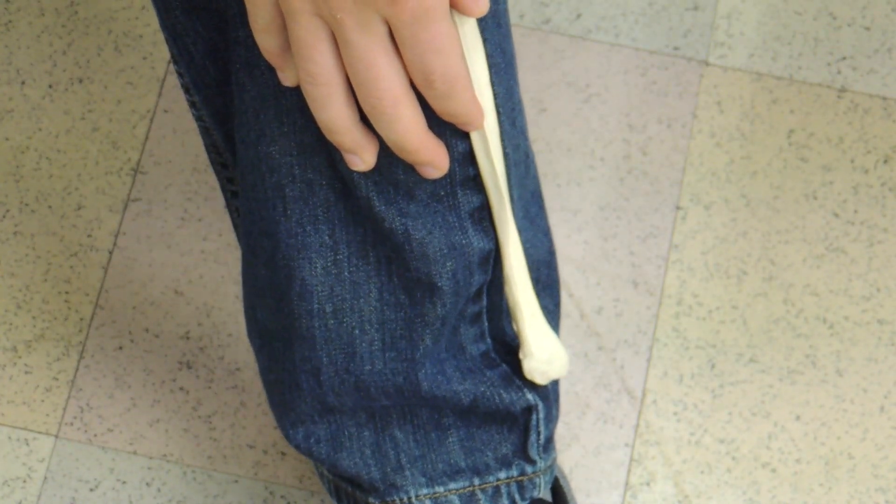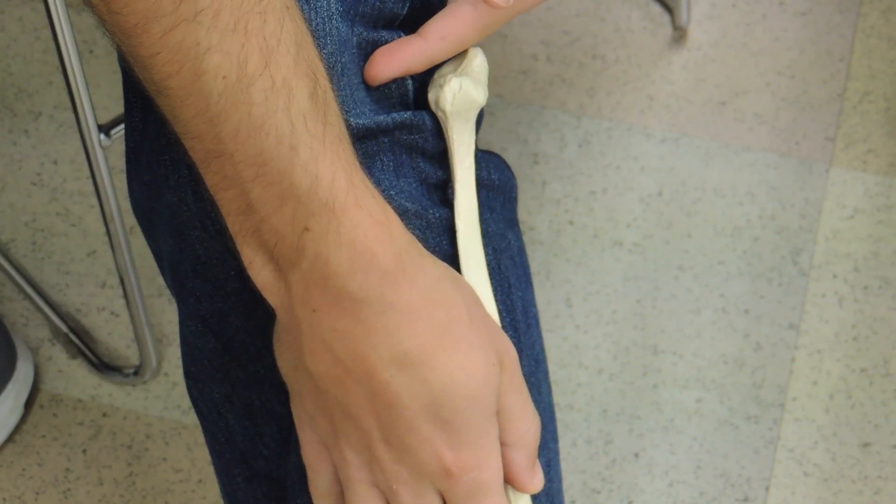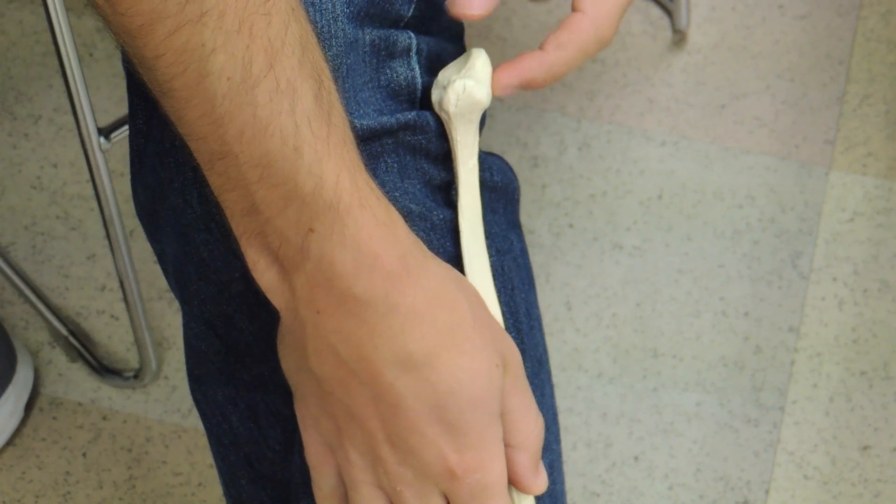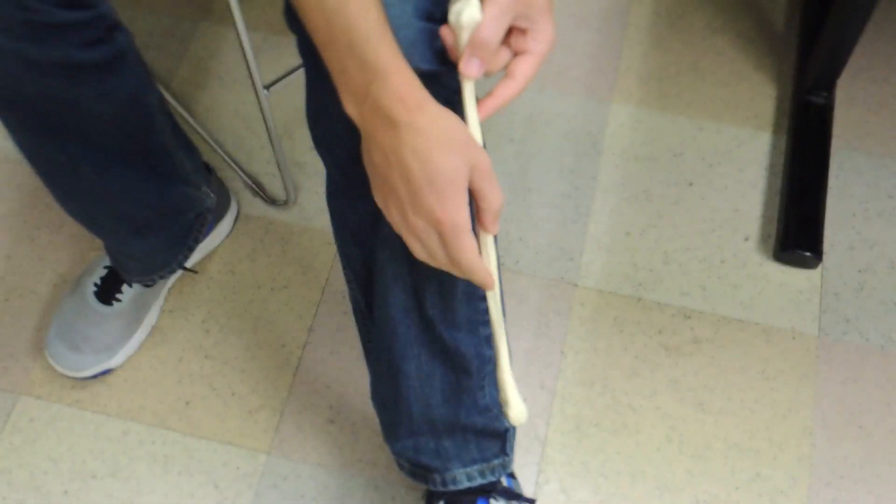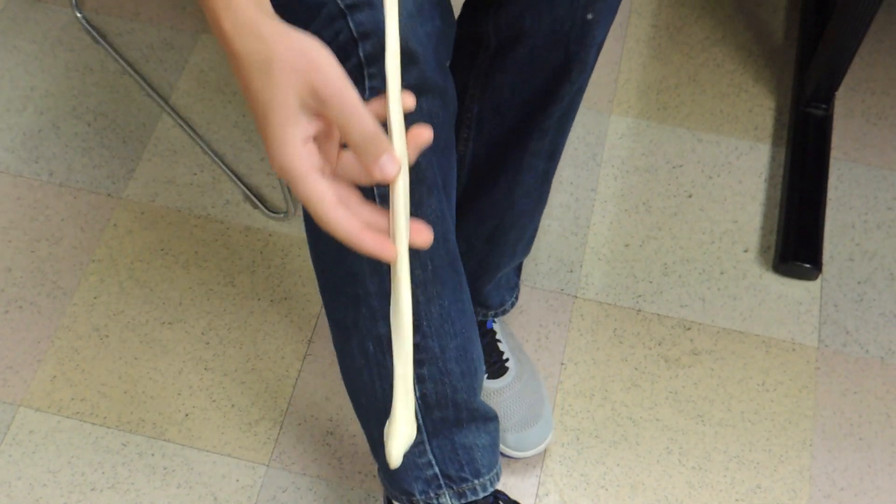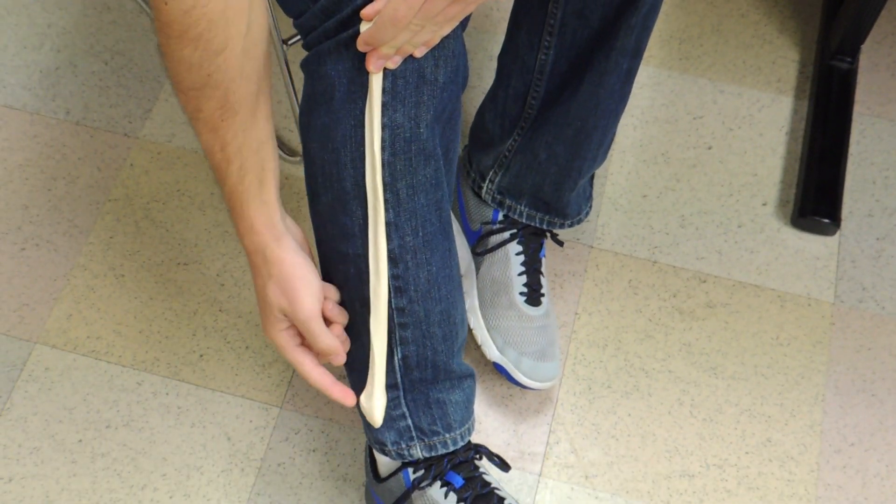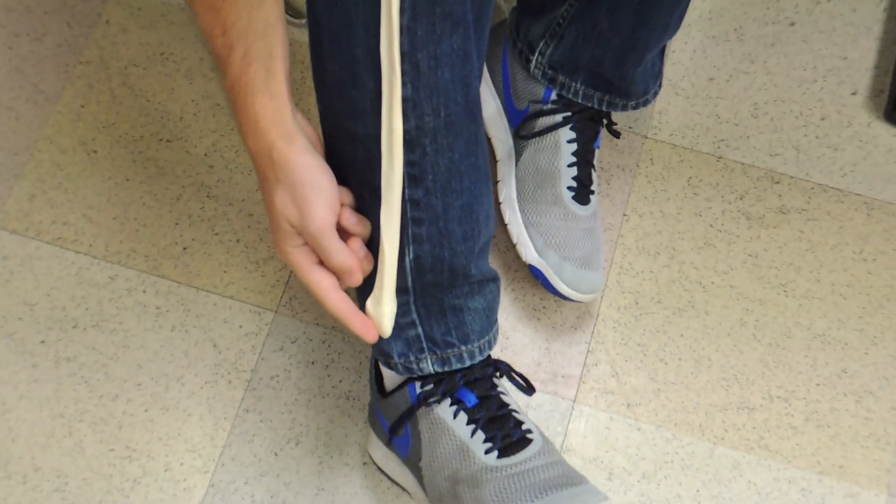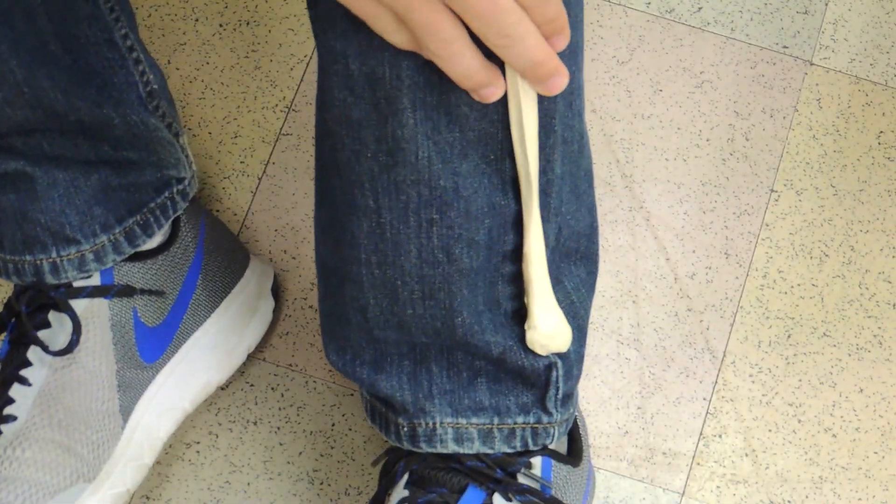So if it does that, you could see that the tibial articular facet is articulating with the tibia and the lateral malleolus is pointing backwards. If you were to go on the other side, the lateral malleolus is pointing anteriorly, which would make this not a right. This is a left fibula.